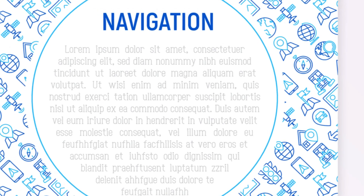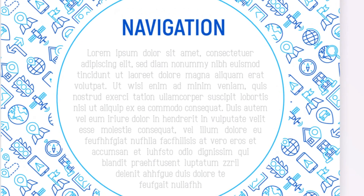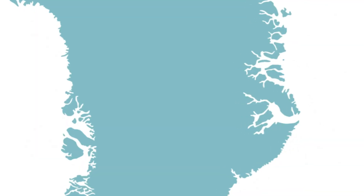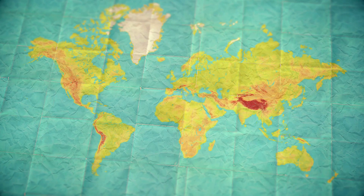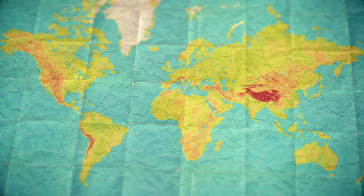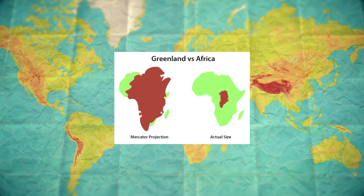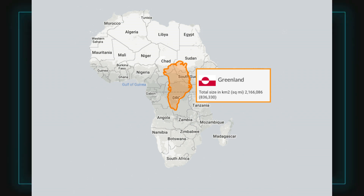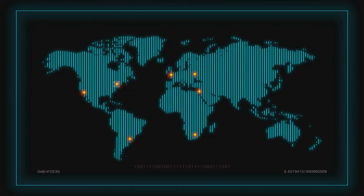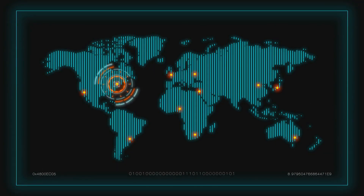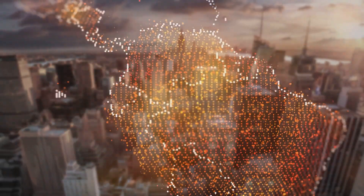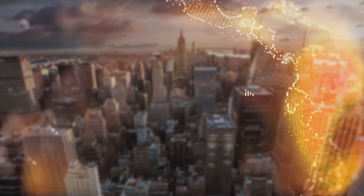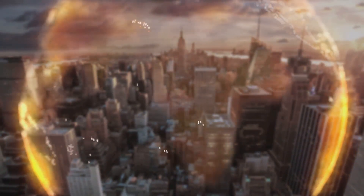However, as you move further from the equator towards the poles, the Mercator projection begins to distort. This distortion results in an exaggerated representation of land masses. Greenland, for instance, appears the same size as Africa, when in reality Africa is about 14 times larger. This distortion can give a skewed perception of our world, inflating the size of developed nations in the northern hemisphere while diminishing those near the equator. So, while the Mercator is excellent for sea navigation, it might not give the most accurate representation of our world's landmasses.